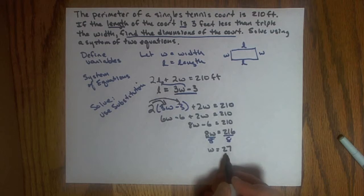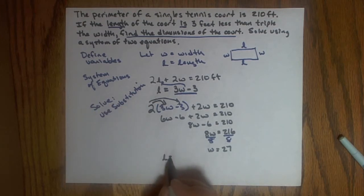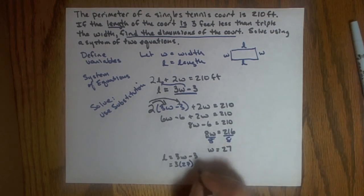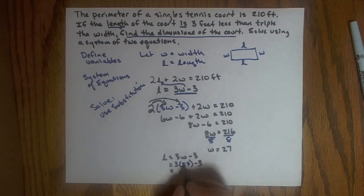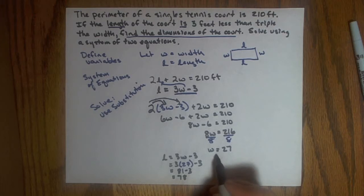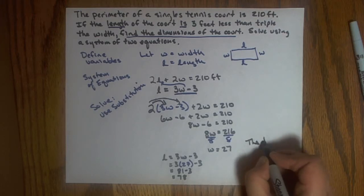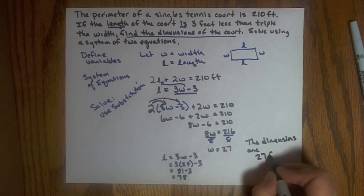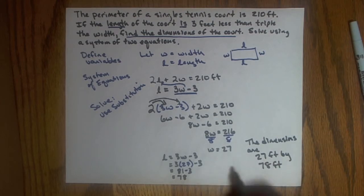So now I've got a value for the width. Now I want to find a value for the length. I know from one of my first equations that the length equals three times the width minus three. So I can put in 27 now for the width, minus three, and simplify and evaluate to figure out what that is going to be. So I'll have three times 27, which is 81, minus three, 78. So now I have an answer, and my answer is that the dimensions are 27 feet by 78 feet. Or I could say the width is 27 feet, the length is 78 feet.